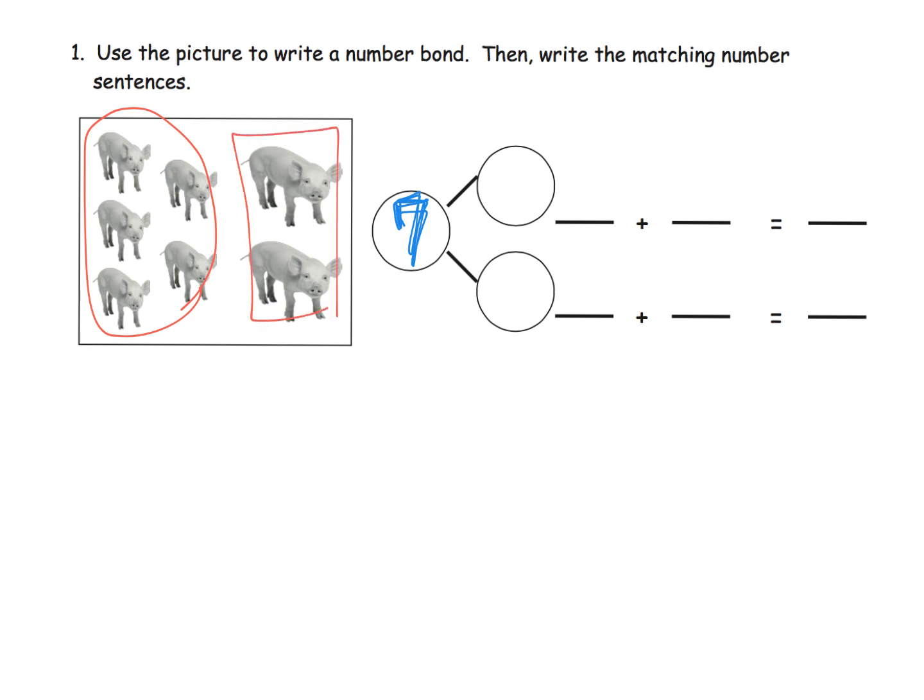And so we could write five and two. Now that number bond automatically means we can write two different addition equations, number sentences. We could write five plus two equals seven.